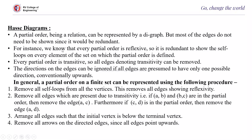In general, a partial order on a finite set can be represented using the following procedure. First, remove the self-loops from the vertices — by default it is assumed that every node is related to itself. This removes all edges showing reflexivity. Next, remove all edges present due to transitivity: if AB and BC are in the partial order, remove the edge AC. Similarly, if CD is in the partial order, remove edge AD. Then arrange all edges such that the initial vertex is below the terminal vertex. Finally, remove all arrows on the directed edges since all edges point upwards.